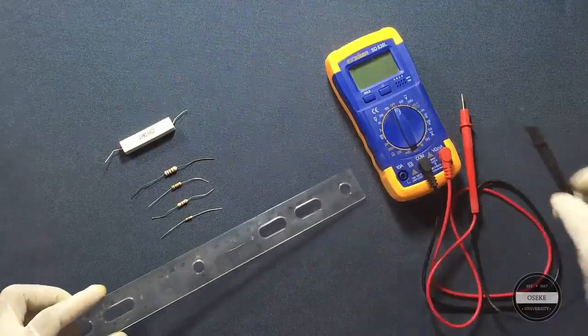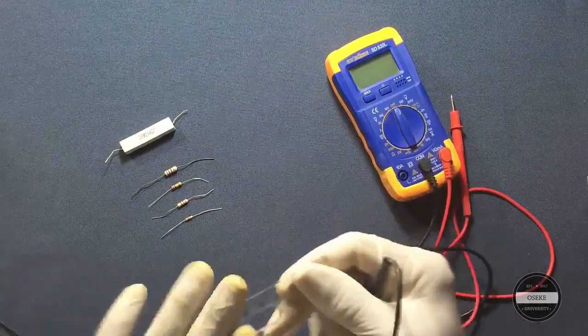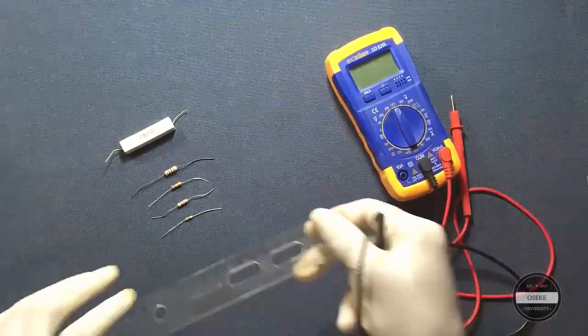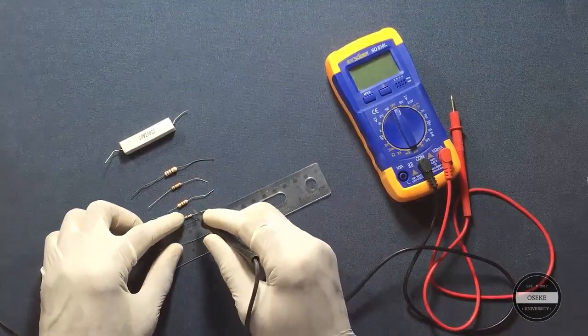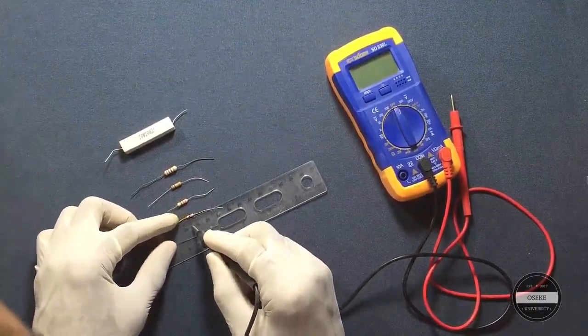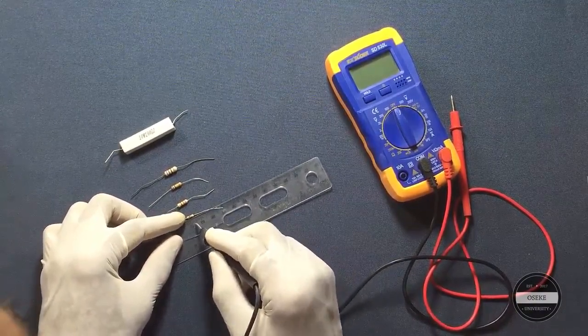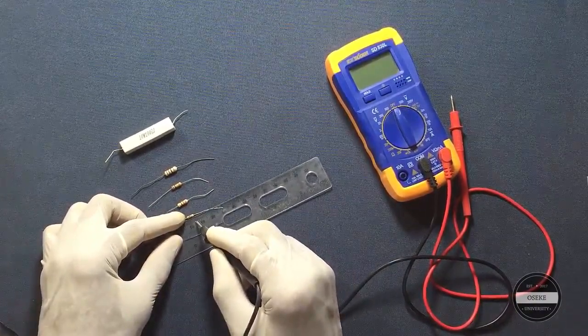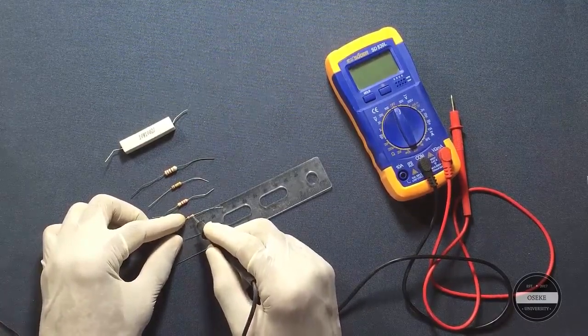All right, so as you can see these are different resistors and I have the ruler here with me. This resistor is about five millimeters long.